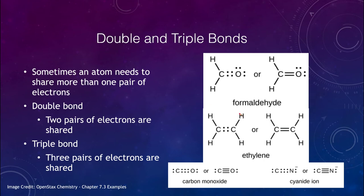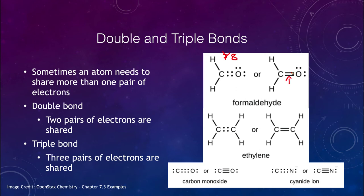Looking at formaldehyde: carbon bonds with two hydrogens, which gives it two more electrons in its valence shell — up to only six. If it bonded with oxygen with a single bond, it would have seven. So we have to share a pair of electrons, giving it eight. There is a double bond here, represented by double lines, which gives eight electrons in each shell following the octet rule. For carbon: two, four, six, eight. For oxygen: one through eight. Hydrogen only needs two, so it just has the one bond.